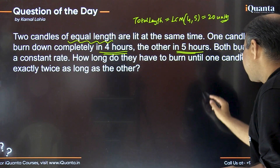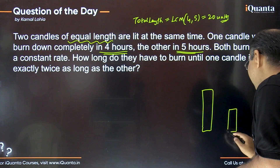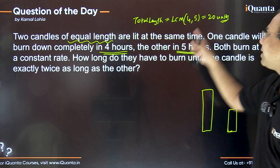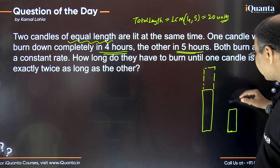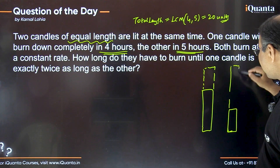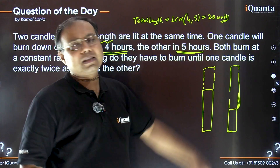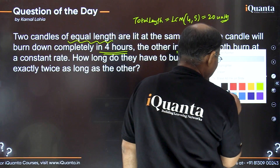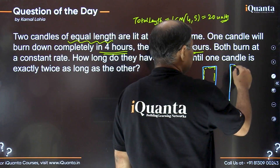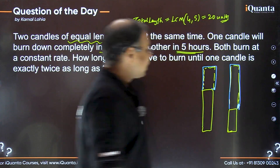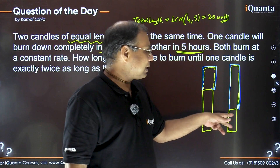Our final requirement is that one candle should be twice the length of the other. But initially both candles were of equal length, which we've assumed to be 20 units. Drawing a diagram makes it easier to visualize: initially both candles were of length 20 units. The blue part represents what has been burned down, and we are finally left with the yellow part where one is twice the other.